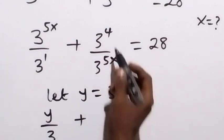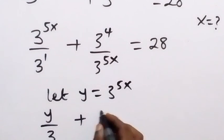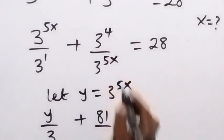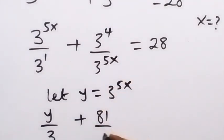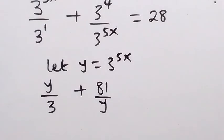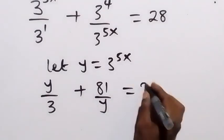3 raised to power 4 will be written as 81, that's 3 times 3 times 3 times 3, over 3 raised to power 5x, which is y. This equals 28.